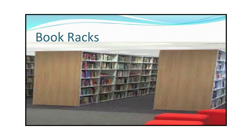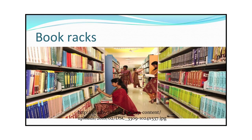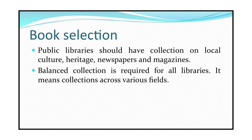Library furniture should be comfortable so that users can sit for longer hours and concentrate on their work. There should be enough space between the racks so that users can walk around and browse the books shelved in the racks. The reading room should be well lit and the atmosphere should be appealing so that more and more readers are drawn towards the reading halls and are tempted to sit for longer hours and study. The height of the racks should be normal so that readers may stand on the floor and retrieve books from the top shelf.